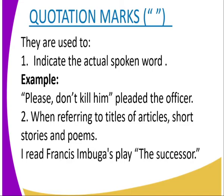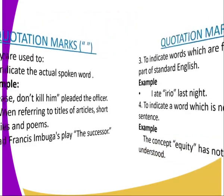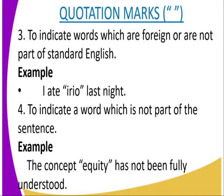For example: I read Francis Mbuga's play "The Successor." Number three, quotation marks are used to indicate words which are foreign or are not part of standard English. Example: I ate a "rio" last night. A "rio" is not an English word, so when we try to indicate any foreign word, we quote and punctuate them properly.